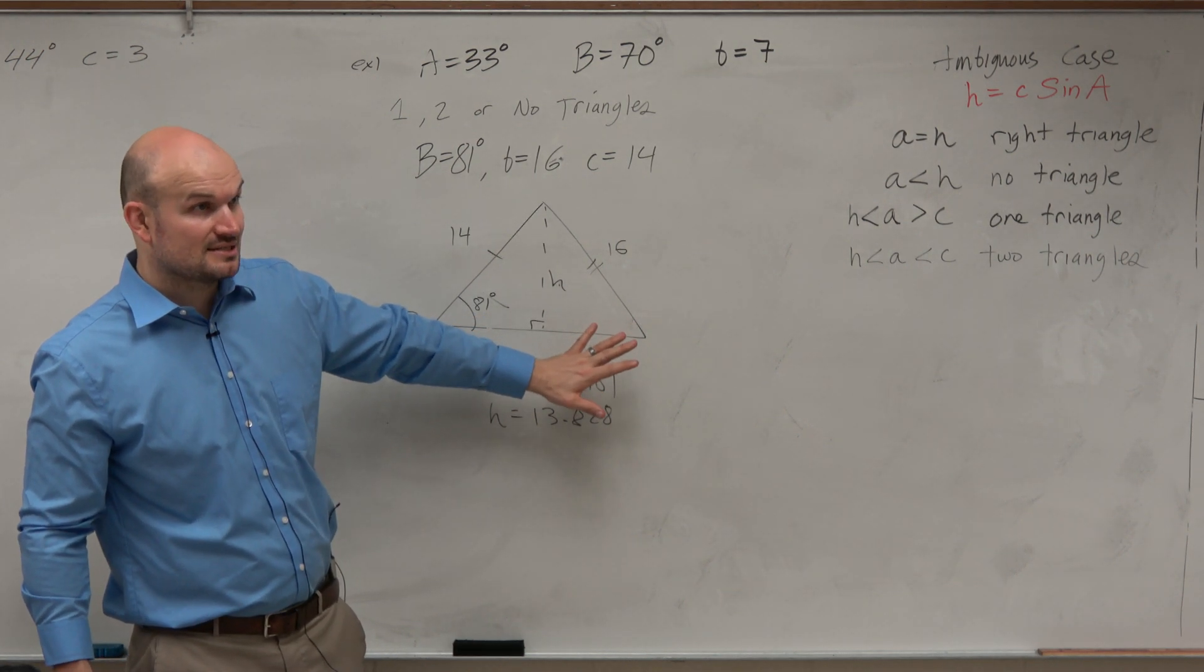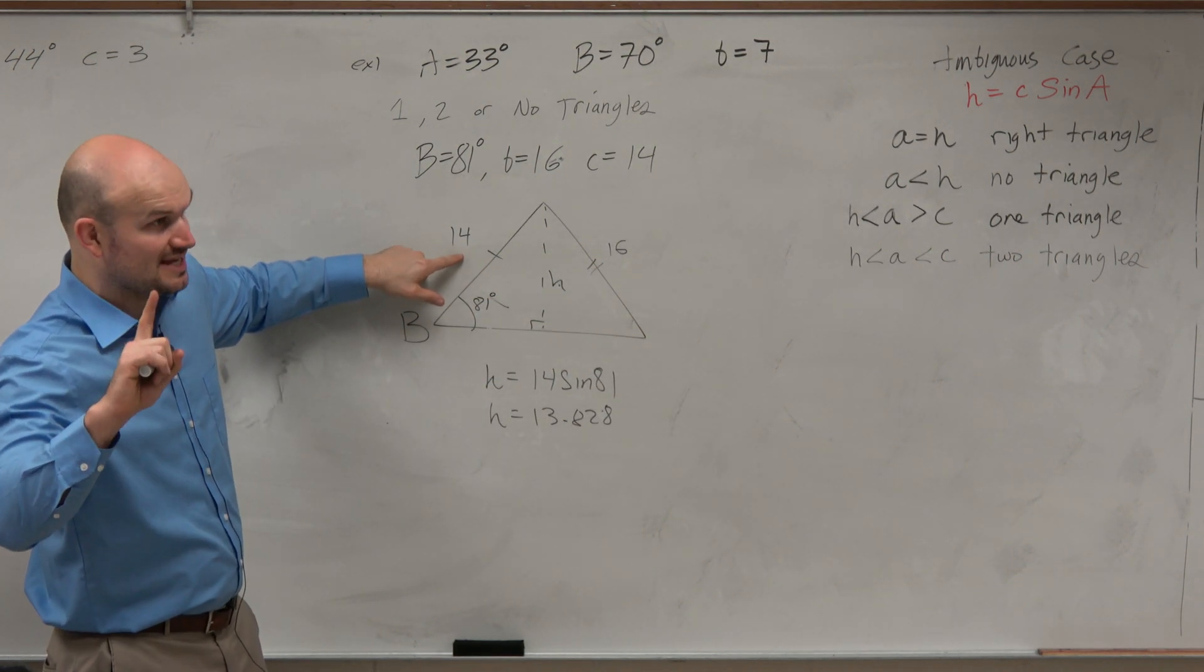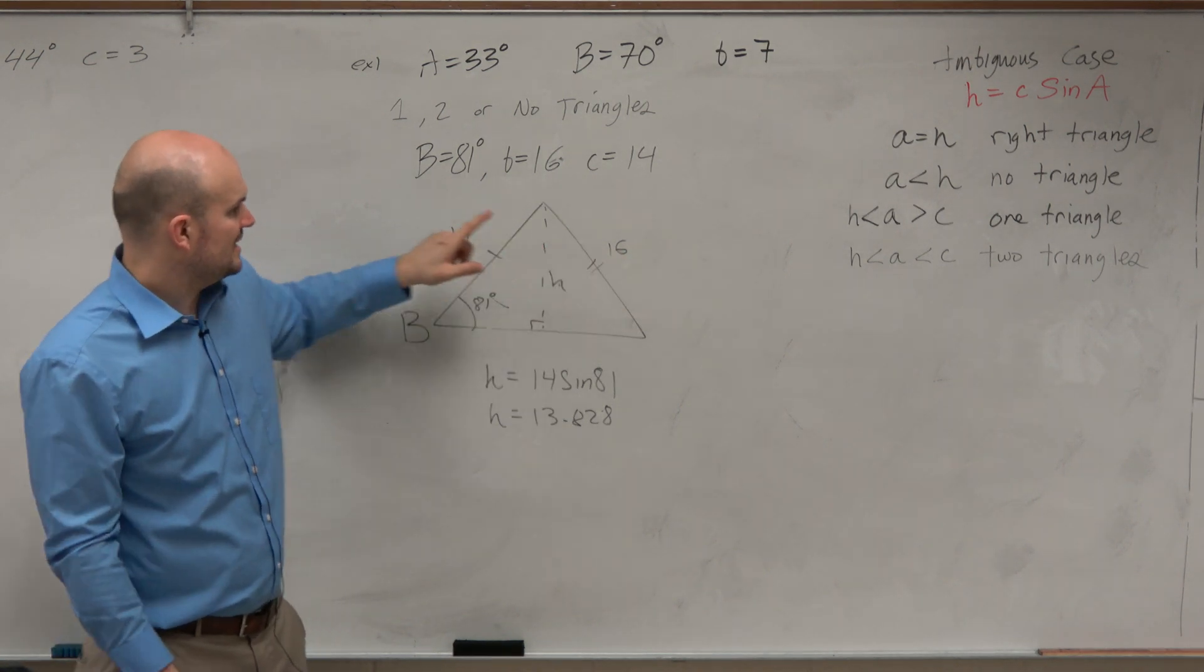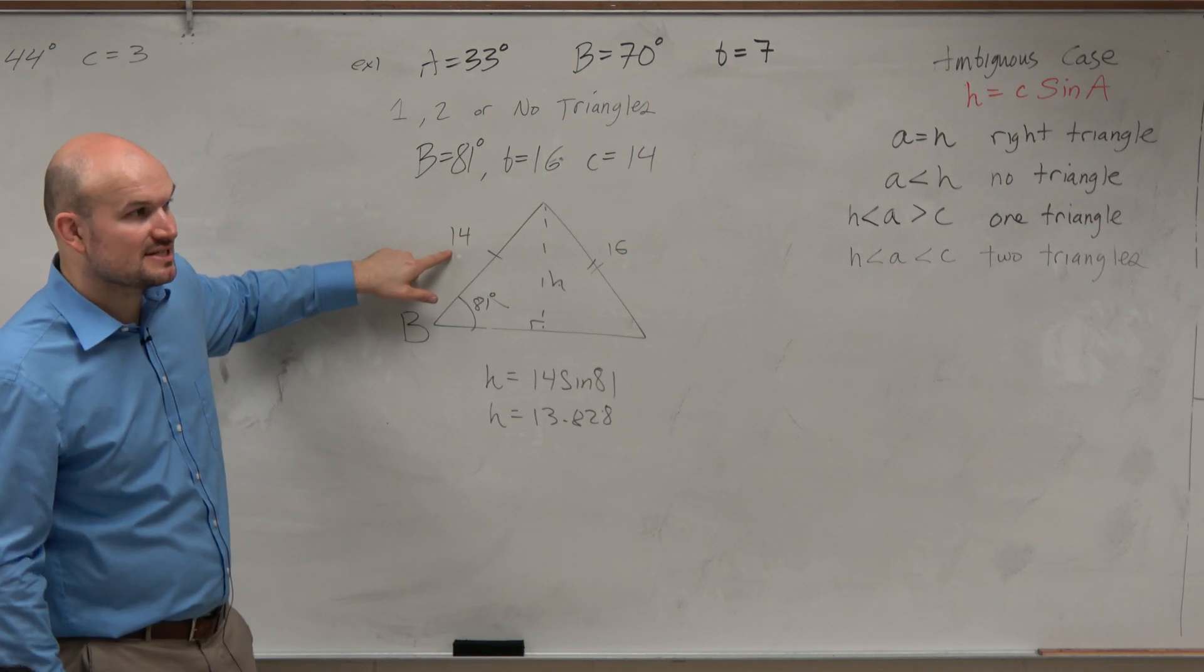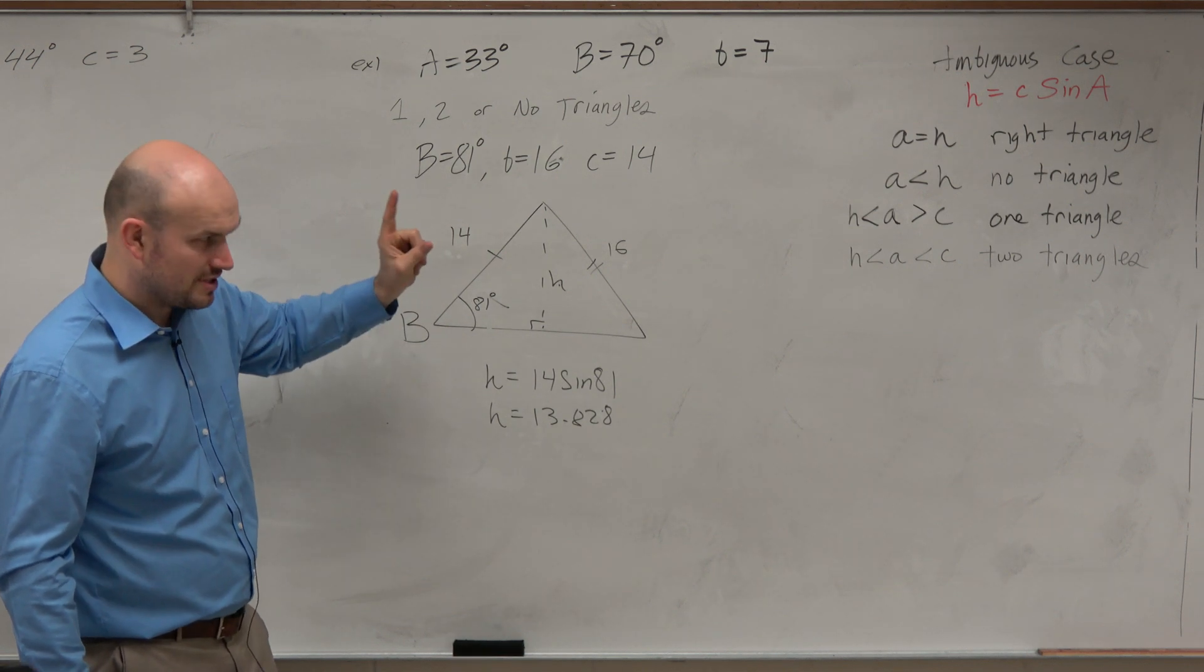So a triangle does exist, right? Now again, if it's larger than this, then there's only one triangle. If it's less than that, then it's two triangles. And obviously, since 16 is larger than 14, we know that there's one triangle.